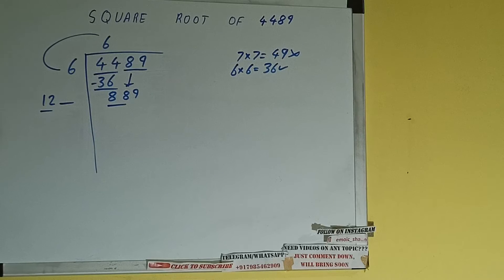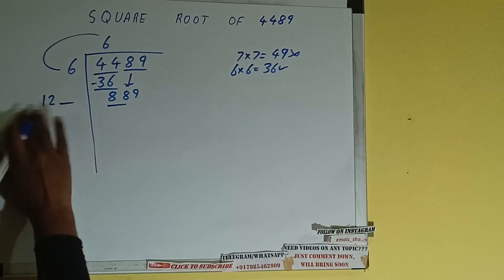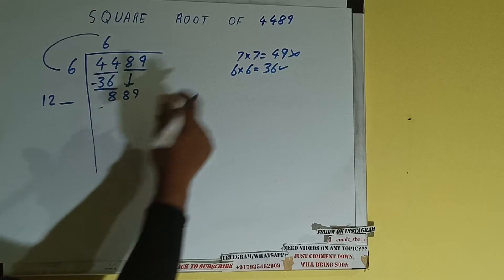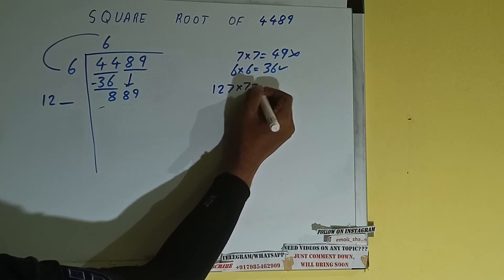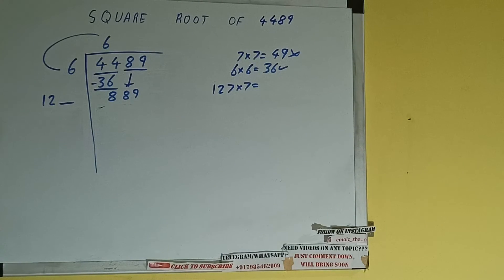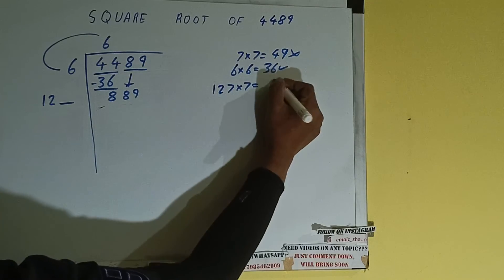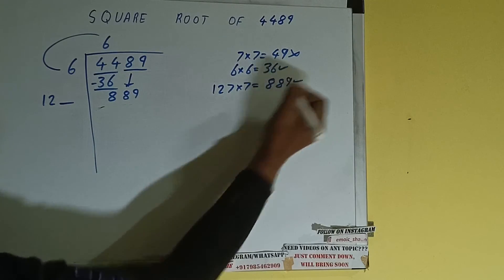So we can compare this 12 and 88. So 12 times 7 is 84. So we can try out 7 times. 127 into 7 we can try and it will be 889 which is good to take.